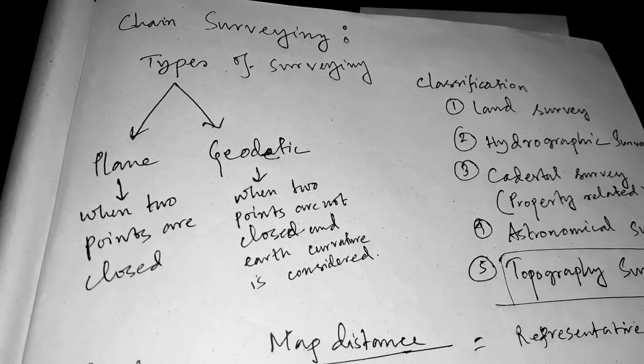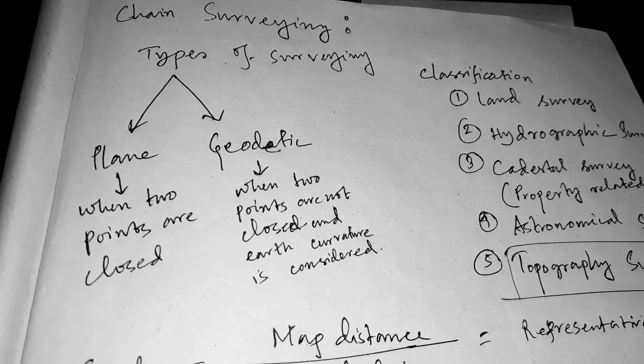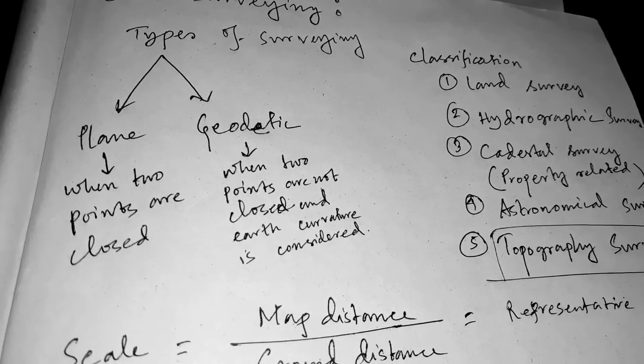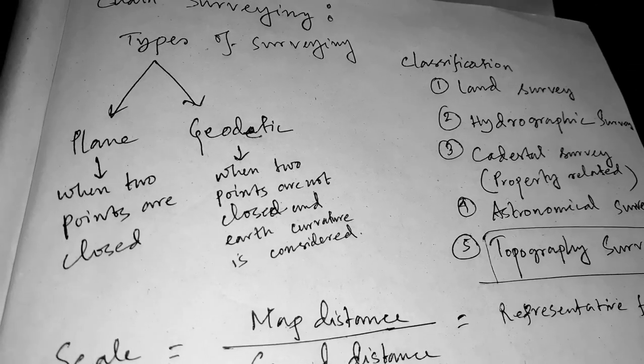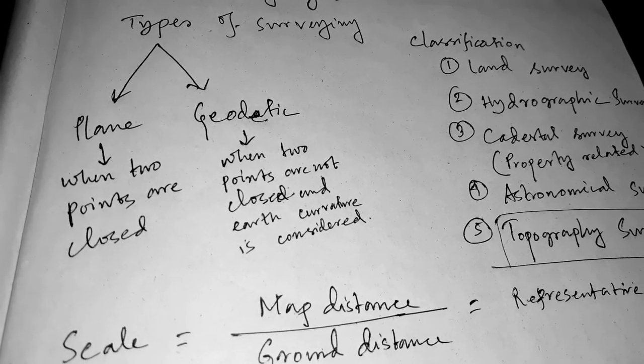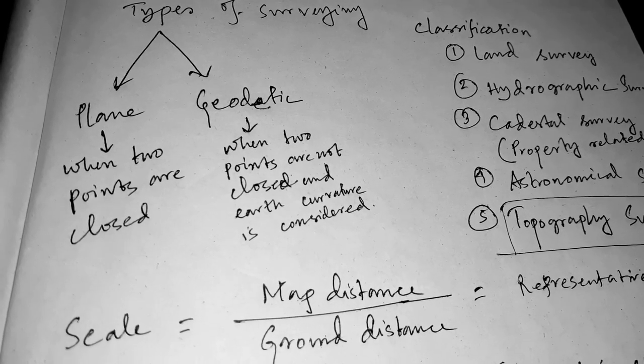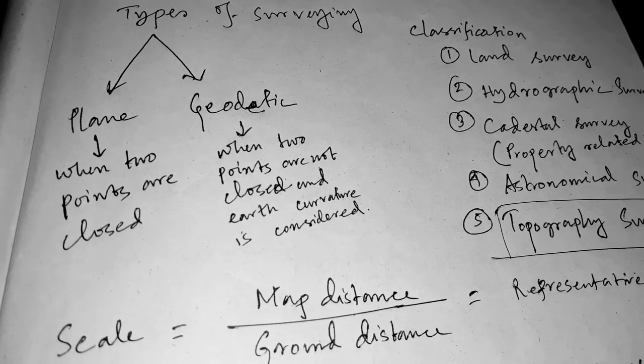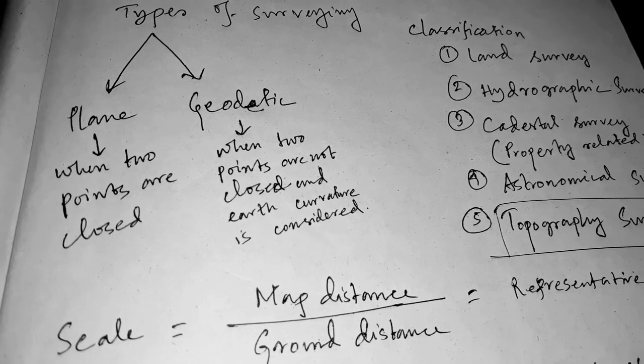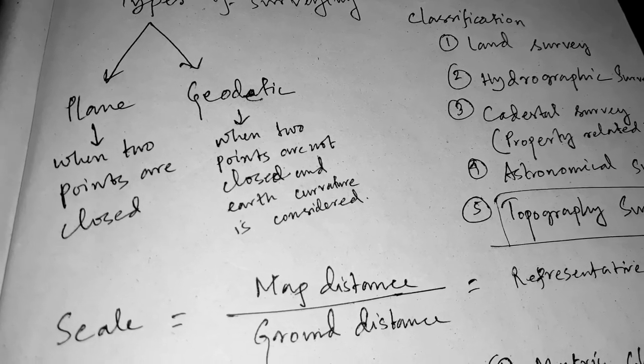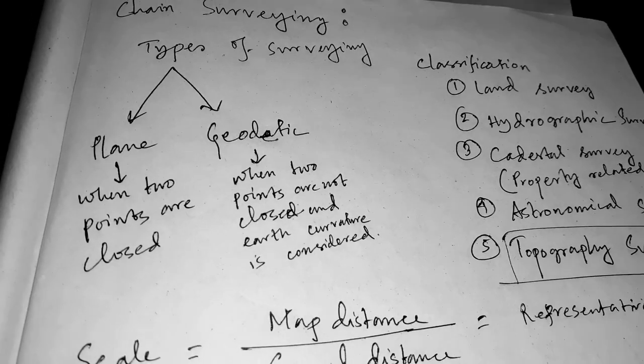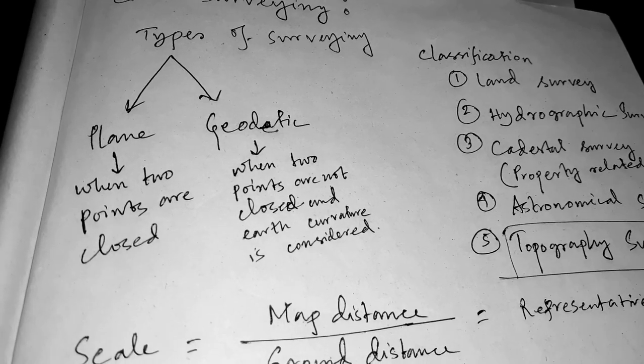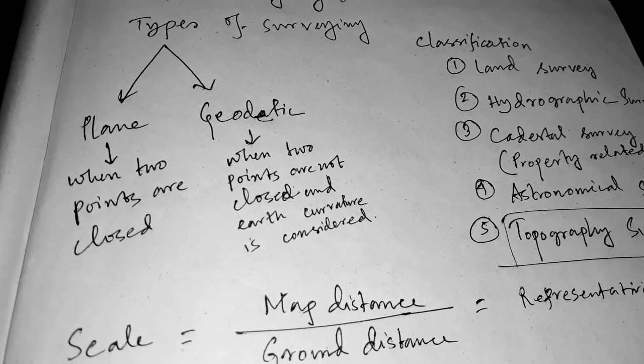Good morning students. Today I discuss the topic of chain surveying. Let's first understand what is surveying. Surveying is the process of determining relative positions of different objects on the surface of the earth by measuring horizontal distances between them and preparing a map to any suitable scale. Measurements are taken in horizontal planes only.